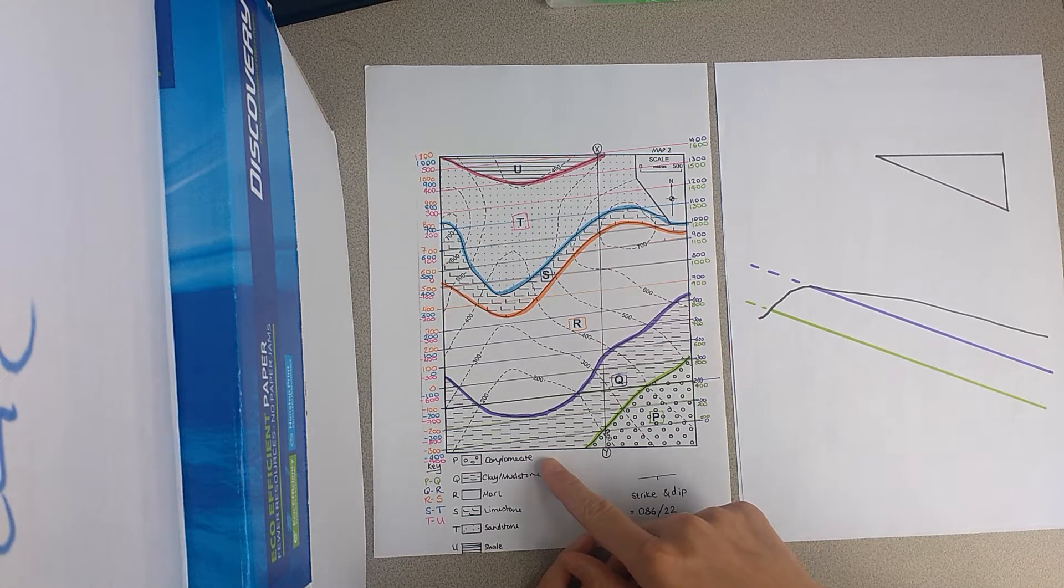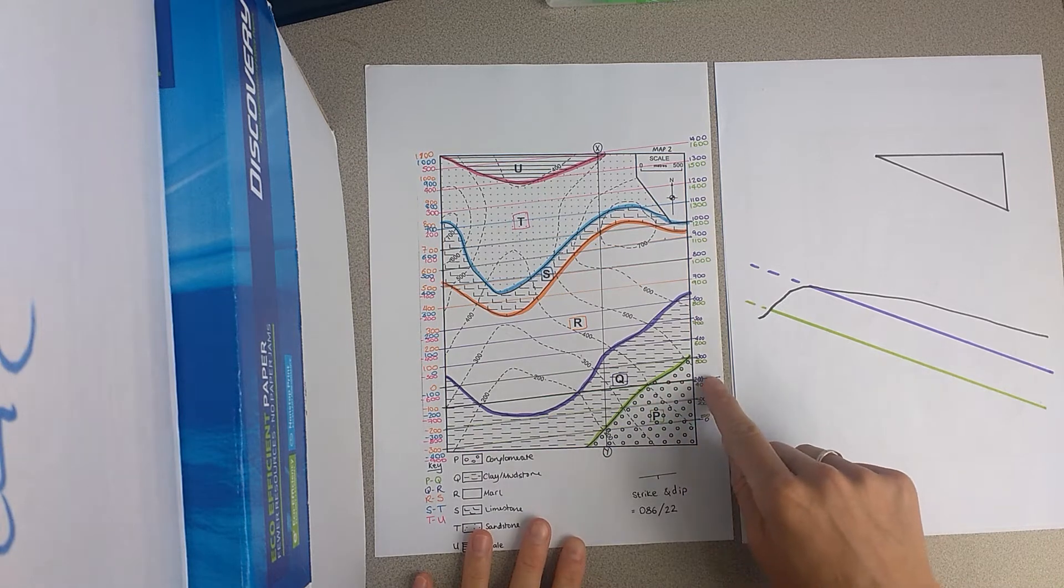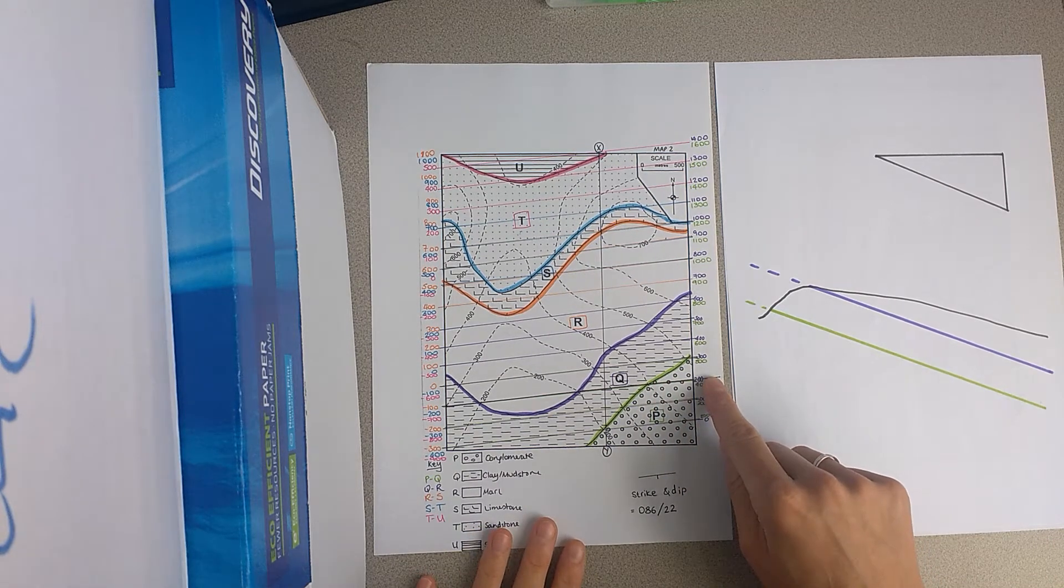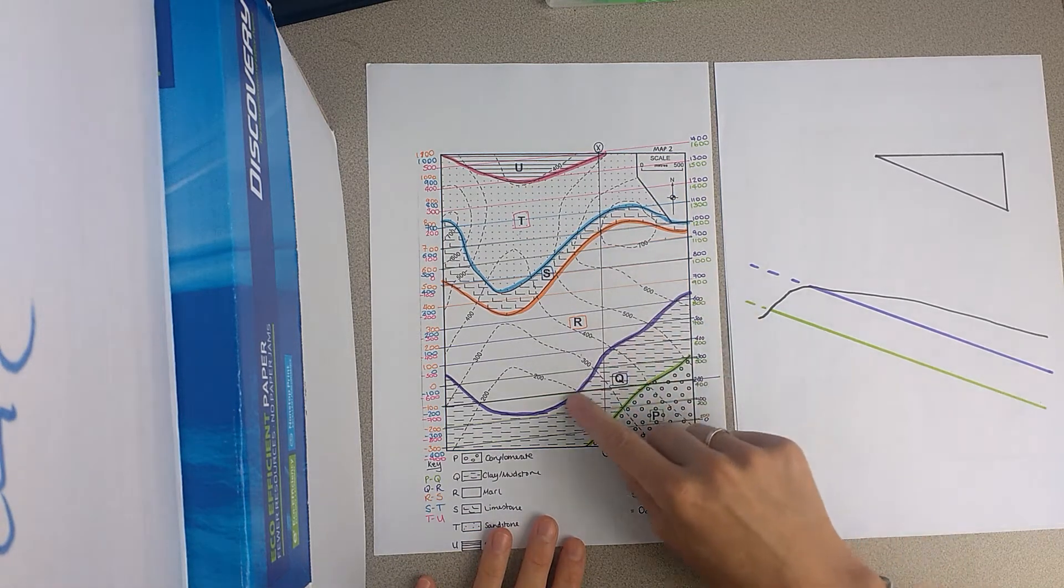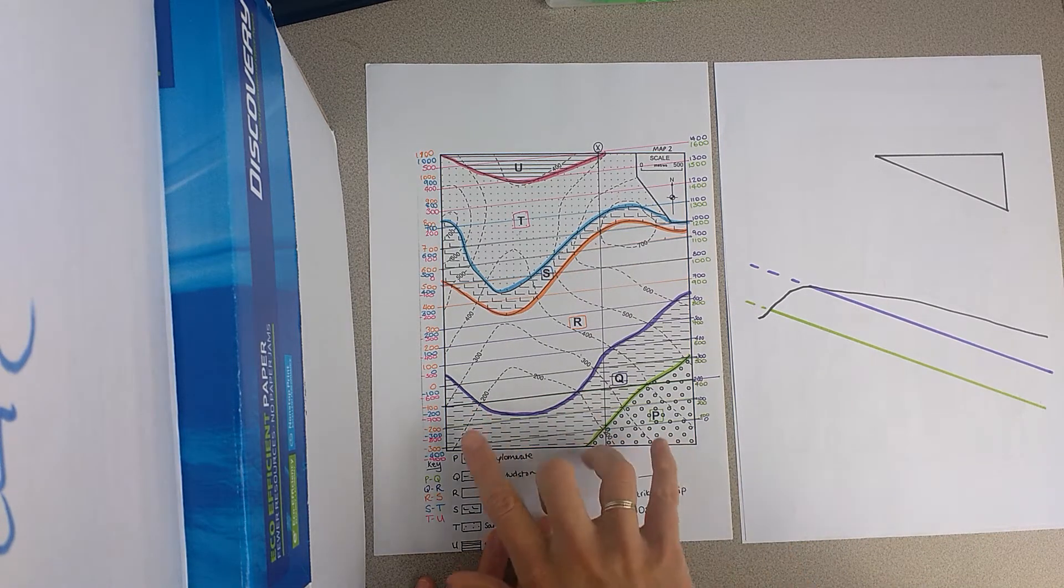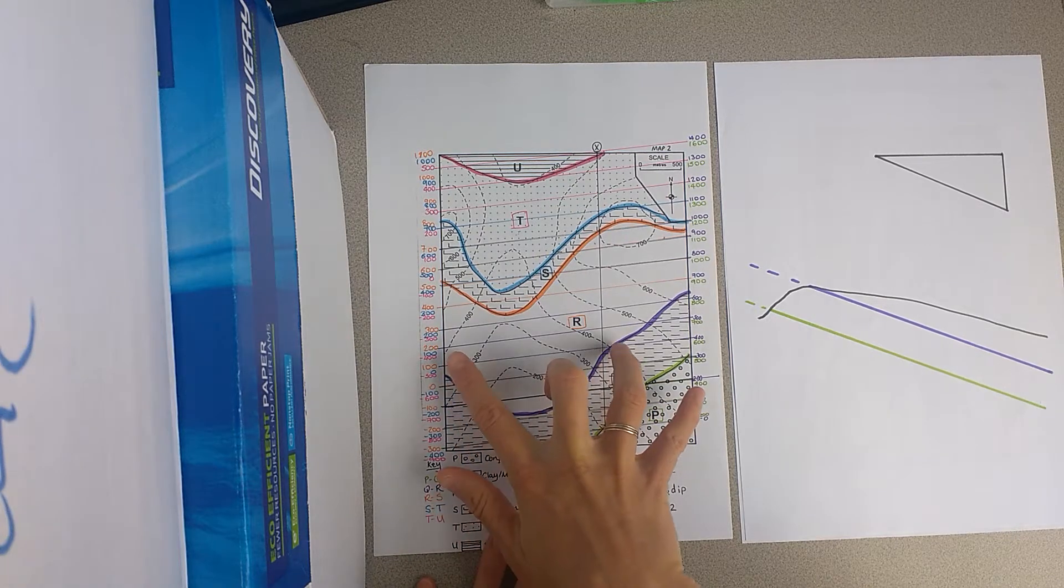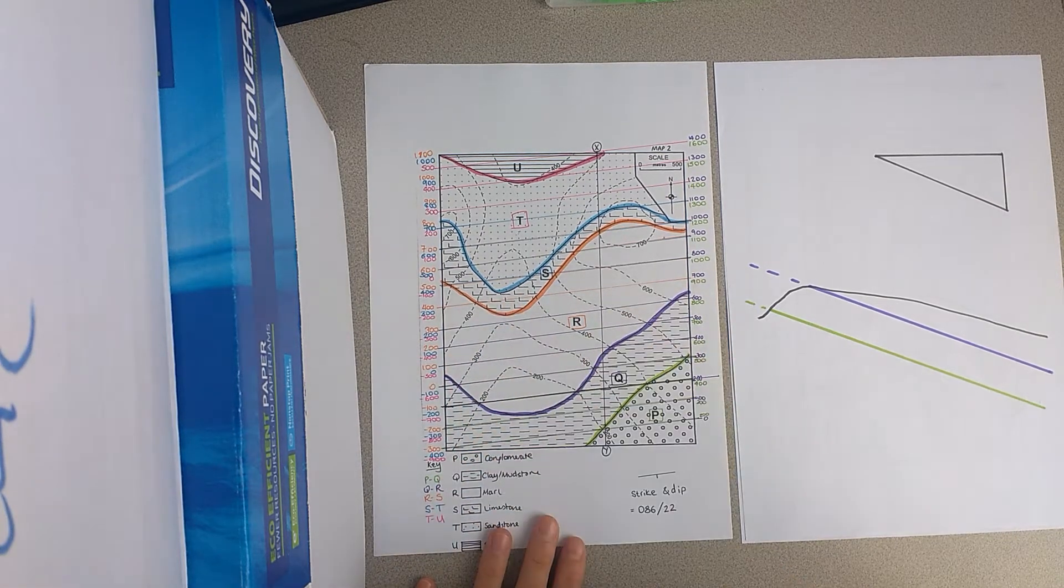So if we want to work out the dip for these units, first of all we're going to draw the structure contours, which are the planes of equal elevation for these surfaces. So remember we joined up the points of equal elevation for this purple line, 200, 300, 400, 500, 600 metres.